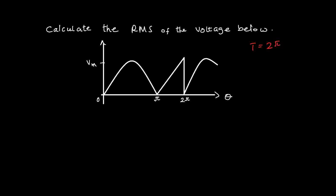Now what we have to do is find the area of the waveform. We have the sine part and then the triangular part. We are going to find the square area of these two parts, add them together, divide by the period, and then take the square root of that to get the RMS value.